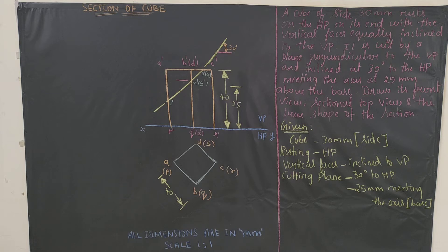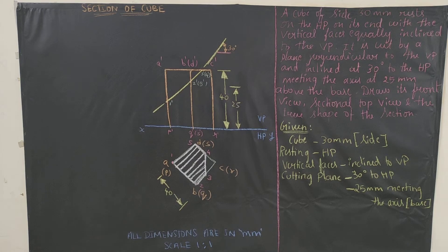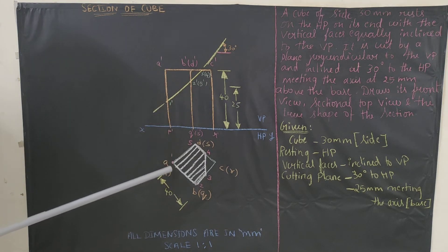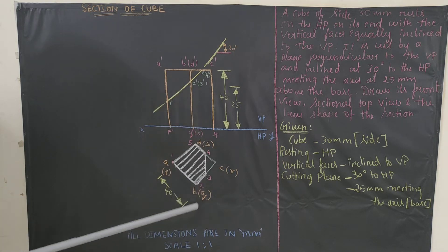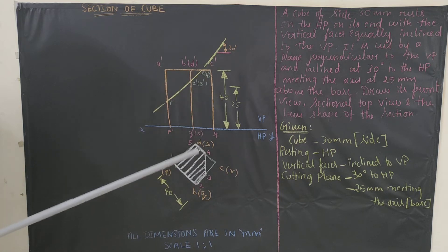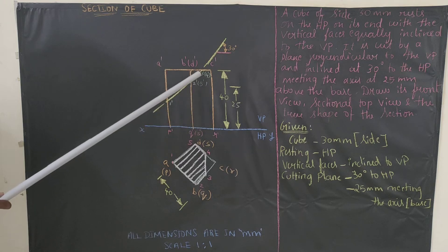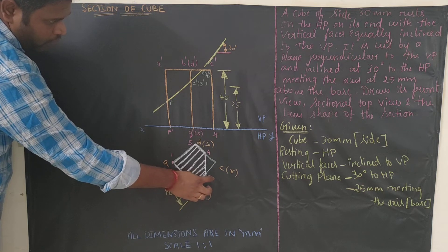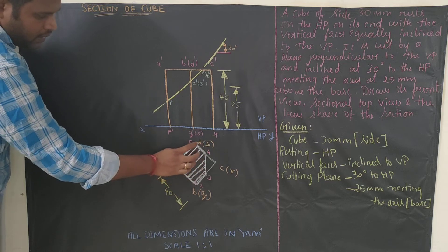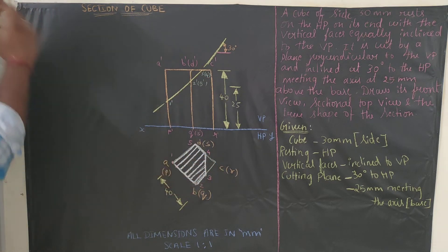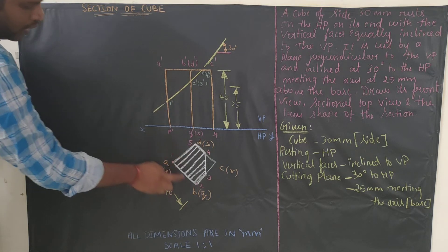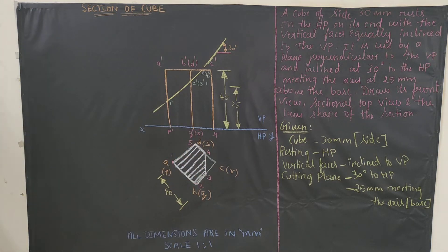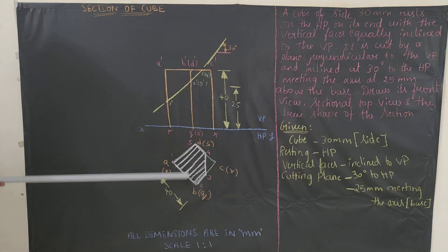The next step is to extend all cutting points vertically down to the top view to get the sectional top view. 1' is between A' and B', so mark point 1 between A and B. 2' is between B' and Q', so mark 2 between B and Q. Extend 3' downward — it cuts BC at point 3. Extend 4' downward — it meets DC at point 4. 5' is between D and S, so mark 5 there. Join all points 1–2–3–4–5 and apply hatching at 45 degrees with equal spacing. This is the sectional top view.